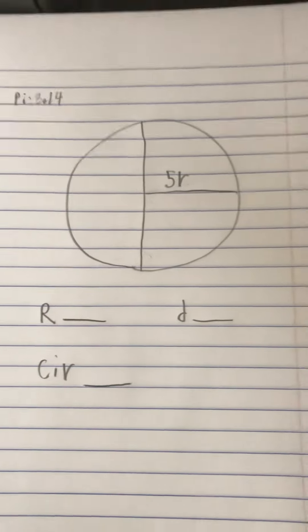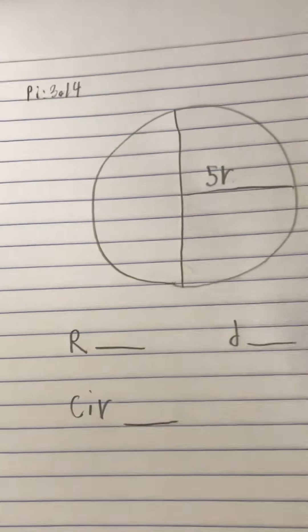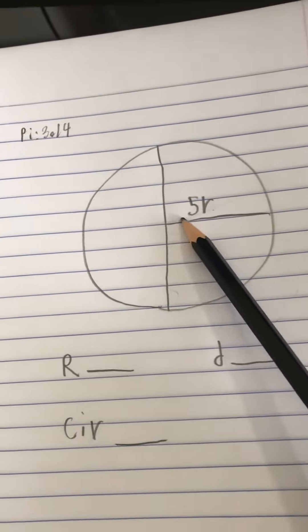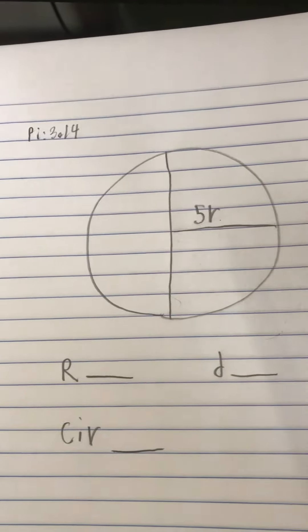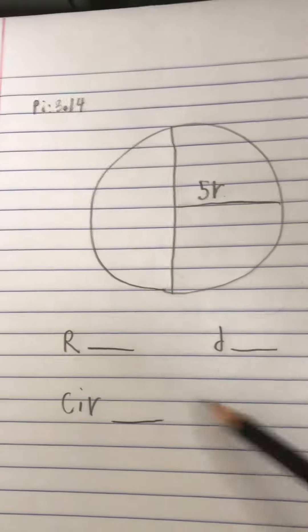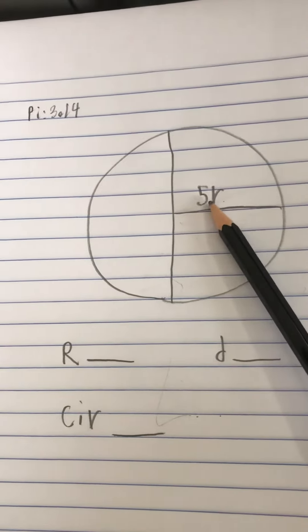So how to find the radius. This is the radius right here, this line. And you can see that it's 5 radius.